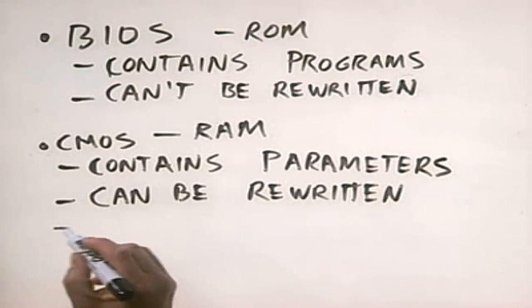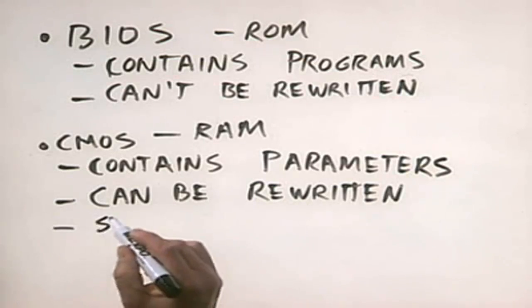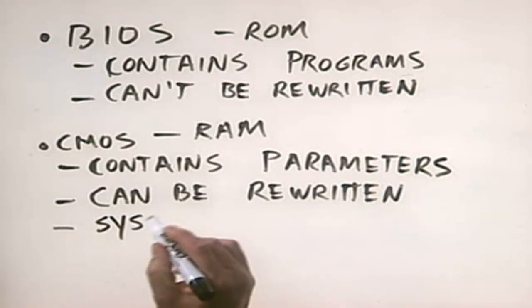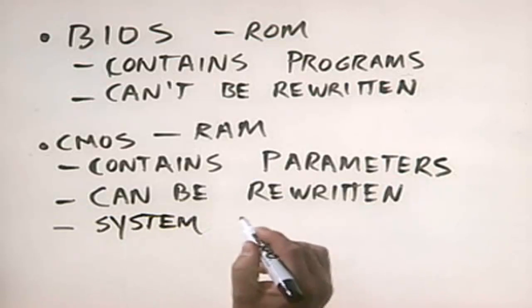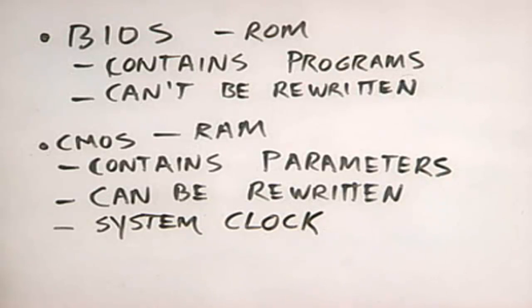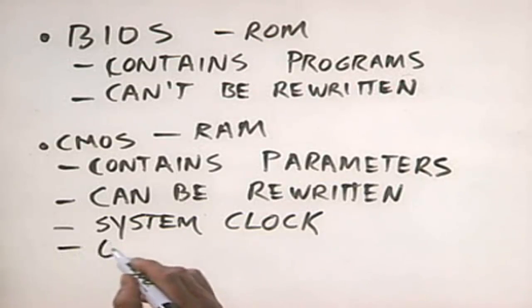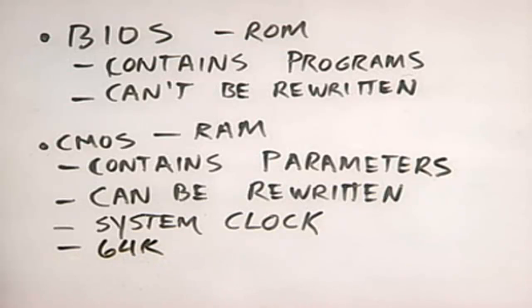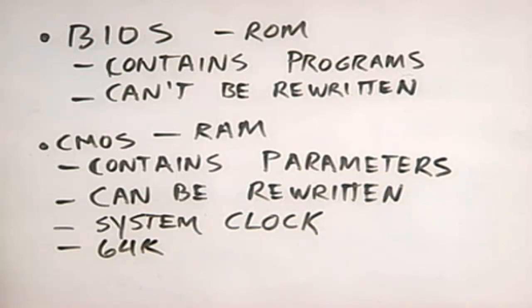The CMOS is also where your system clock runs from. If you look at the time in the bottom right corner of your screen in your operating system, that's where it pulls its time from — from the CMOS. CMOS chips are usually 64K in size, and just like any other random access memory chip, the data in the CMOS is not persistent.